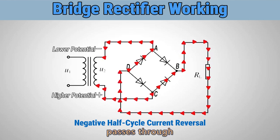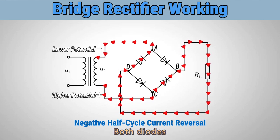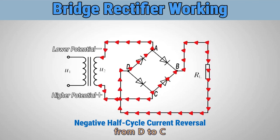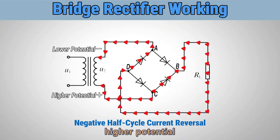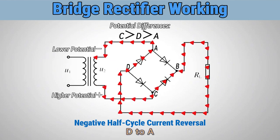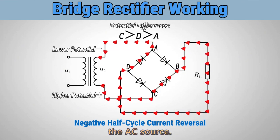The current then passes through the load to point D. Both diodes from D to A and from D to C are forward biased. However, since point C has a higher potential than point D, the current can only flow from D to A and then back to the AC source.